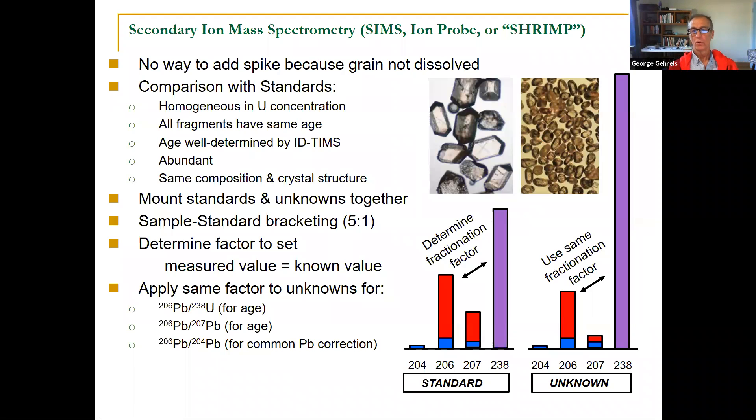Second technique that people do, this has been around for a long time now, is ion probe. You can refer to this as secondary ionization mass spectrometry or super high resolution ion microprobe analyses. And this is done differently along with your unknown zircons, the zircons you're interested in. You also mount some standard zircons, and these are zircons that we know the age of.